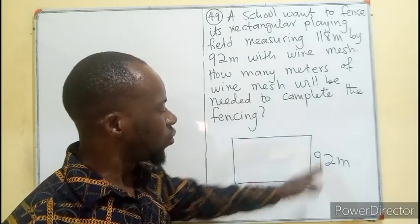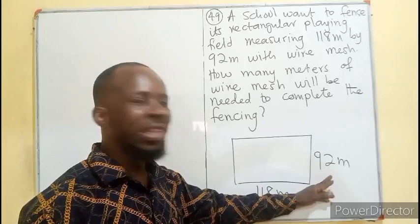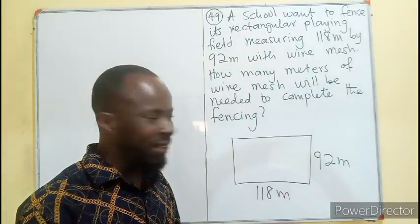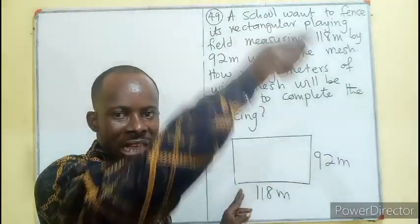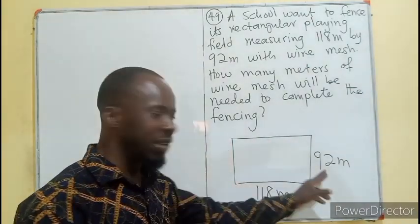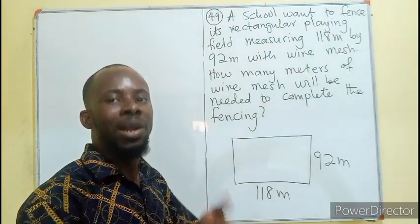So for you to be able to fence the breadth, you need a wire mesh of 92. If you need to fence the length here, we need 118. If I add this to this, I'll be able to fence two sides of the field. Then I need to fence here, which is the same as this, and fence here, which is the same as this. That gives you the perimeter.